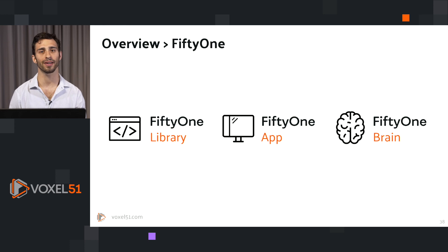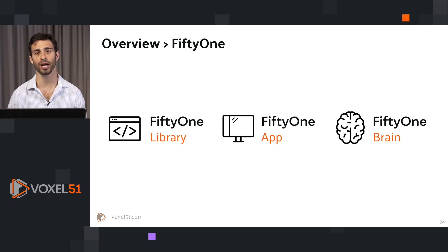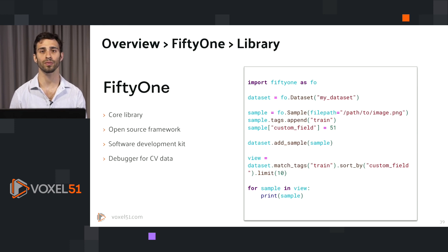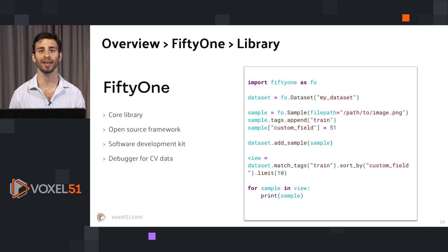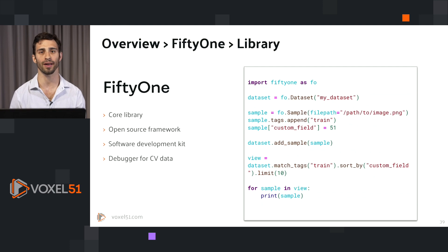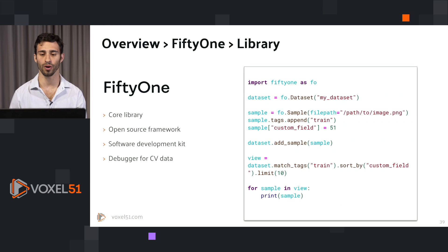To be more specific, FiftyOne is comprised of three pillars: the FiftyOne library, the FiftyOne app, and the FiftyOne brain. The FiftyOne library is the Python SDK — the open source framework that allows you to query your data and perform operations via Python code. You can think of it kind of like a debugger for computer vision data. The code shown creates a sample, creates a dataset, adds tags to the sample, and does other operations — all written with the FiftyOne library.